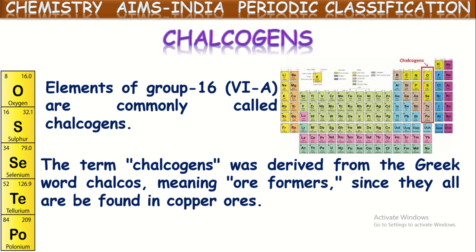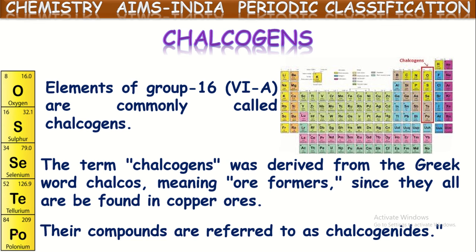Since they are found in copper ores — and not only copper — most of the metallic ores are available in the form of either oxides, sulfides or selenides. That is why these 16th column or 6A group elements are called ore formers, because most of the metallic ores are available in the form of oxides or sulfides. So these are called ore formers or Chalcogens. Their compounds are referred to as Chalkogenites.